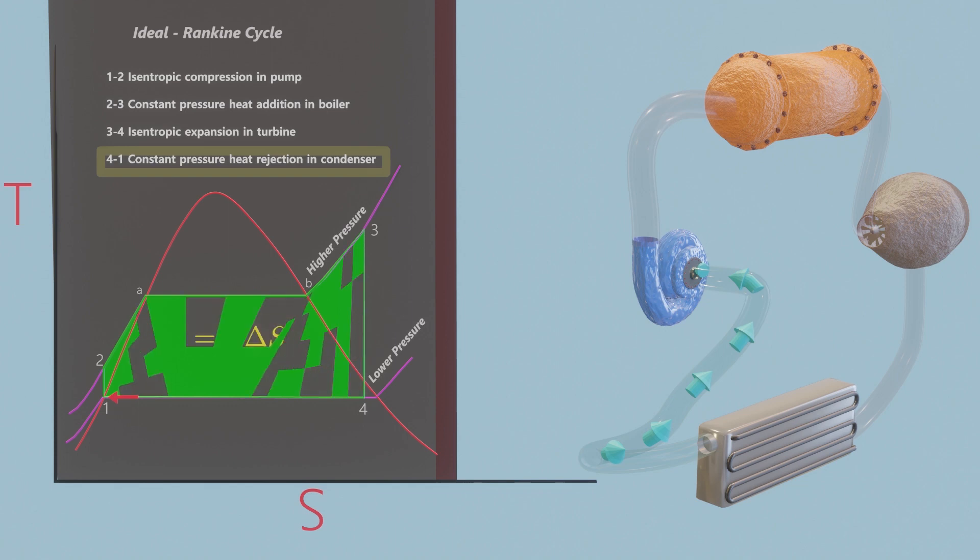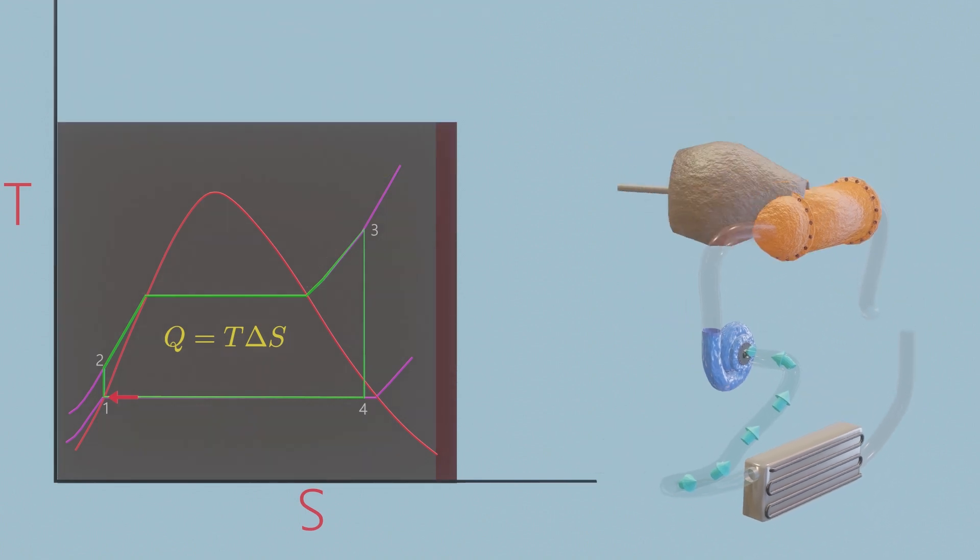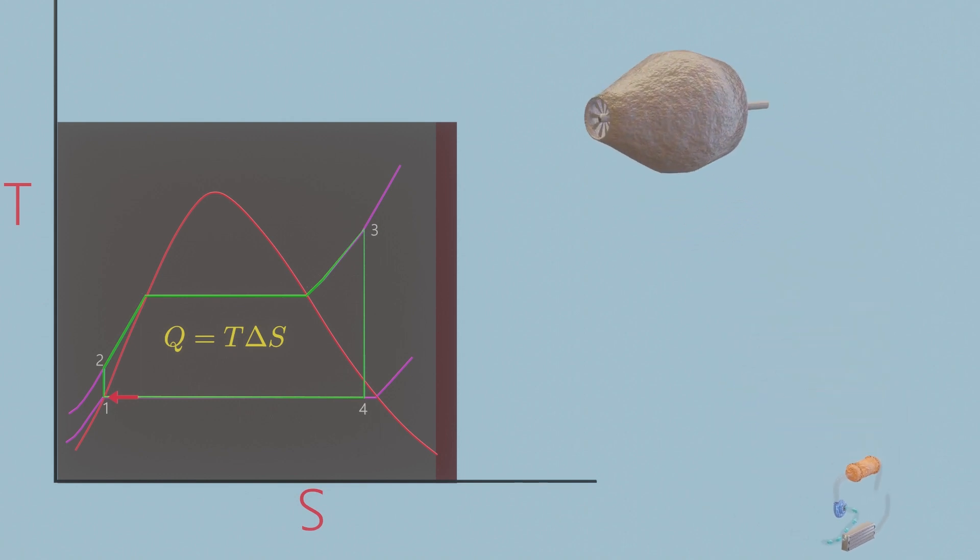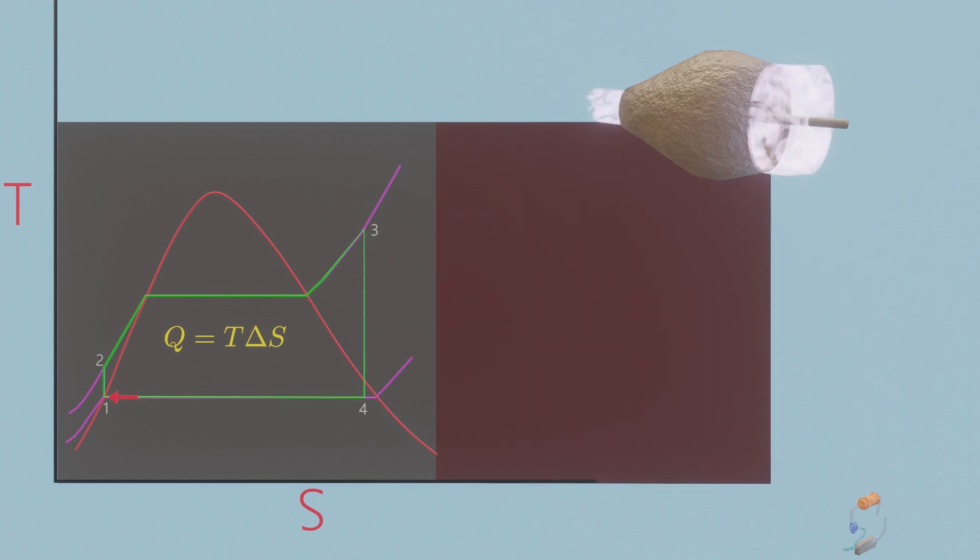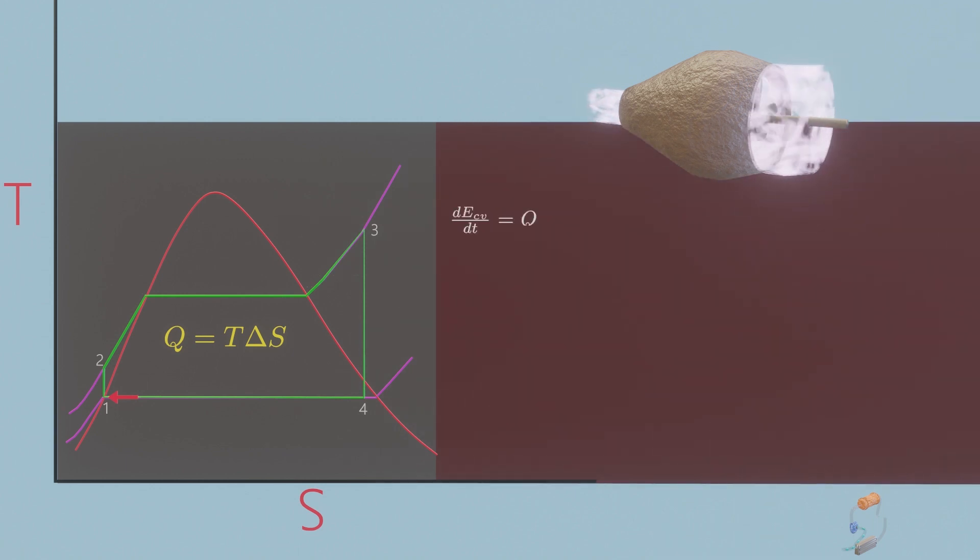All four components associated with the Rankine cycle are steady flow devices, and thus all four processes that make up the Rankine cycle can be analyzed as steady flow processes. Let's assume the turbine as a control volume where mass and energy transfer in and out. The rate form of the energy balance for a control volume is given by. But for steady turbine, time rate of change of the energy contained within the control volume at time t must be zero.